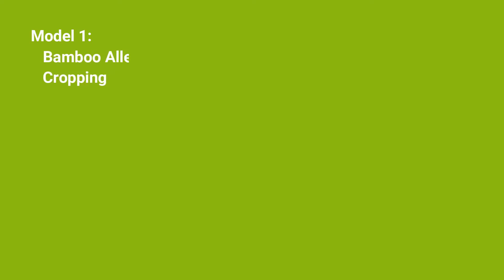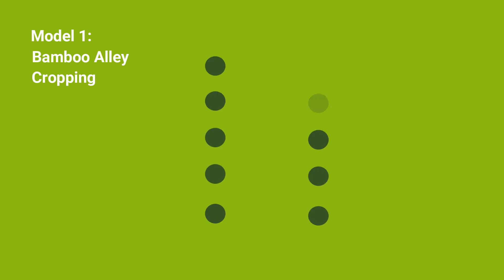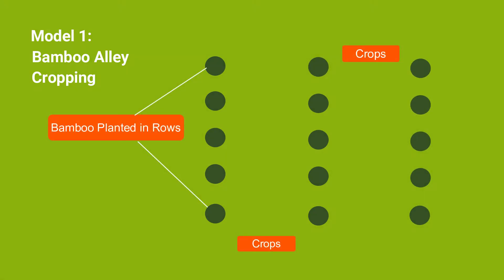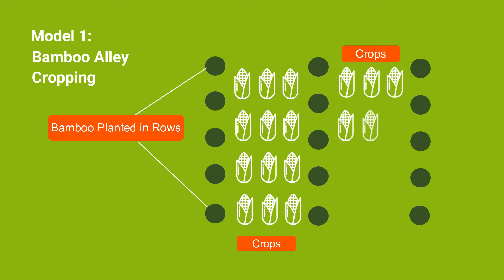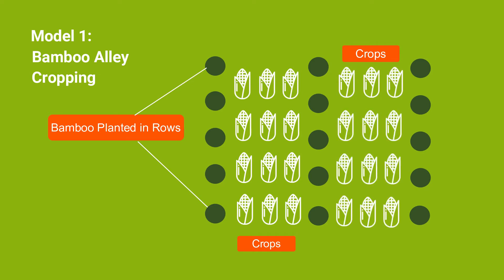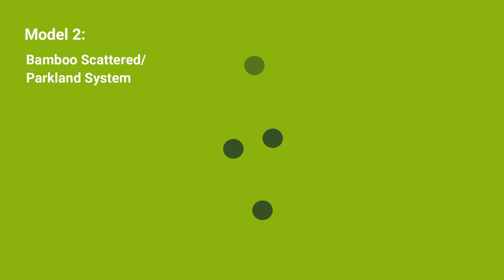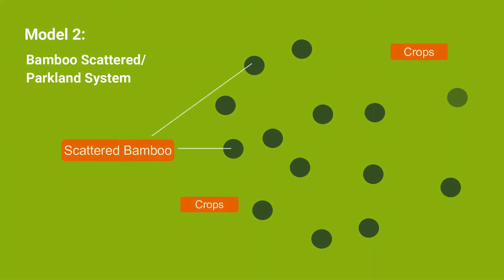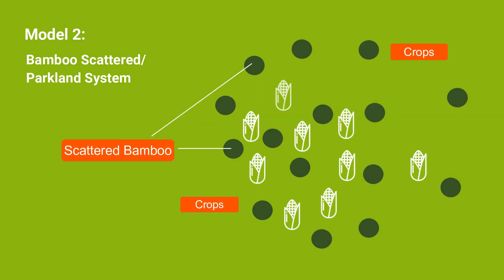There are several models or designs of agroforestry. For example, we can have bamboo alley cropping, where the bamboo is planted in rows — either a single row or double rows. In between the rows, called the alley, you have your food crops or your livestock. We can also have the scatter system, or what we refer to as agroforestry parkland, where the bamboo is scattered on your farmland with crops or livestock in between.